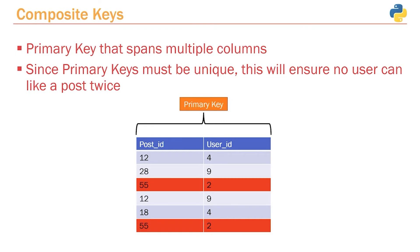We've already covered what a primary key is — it's a column in your table that ensures every single entry is unique, and we always used a column called ID with an auto-incrementing integer. However, we can also make use of composite keys. A composite key is nothing more than a primary key that spans multiple columns. We've only worked with one-column primary keys, but we can have two or three columns. Since a primary key must be unique, making both the post ID and user ID columns part of the primary key will ensure no user can like a post twice.